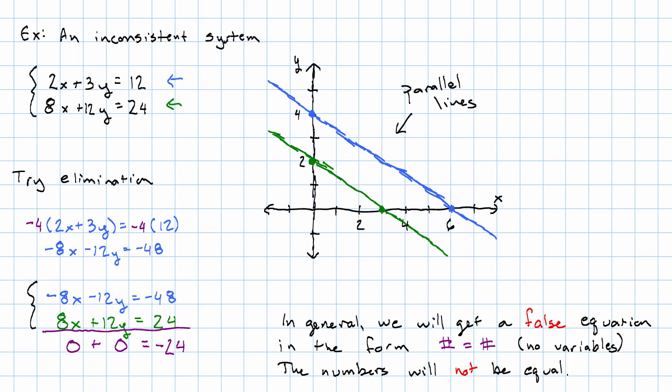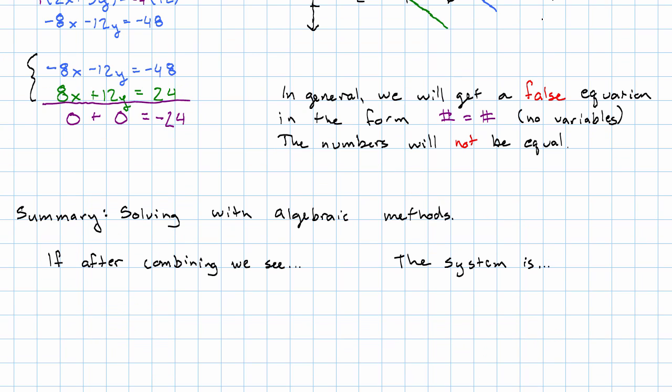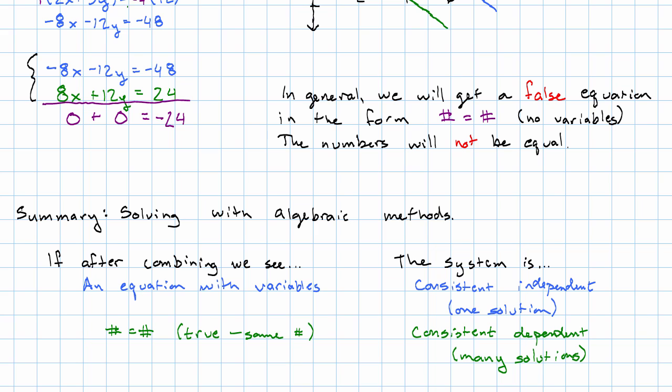So in summary, when we solve with algebraic methods, if after combining our equations we see something that looks like a number equals a number and it's true, they're the same number, then the system is consistent dependent. It has many solutions.